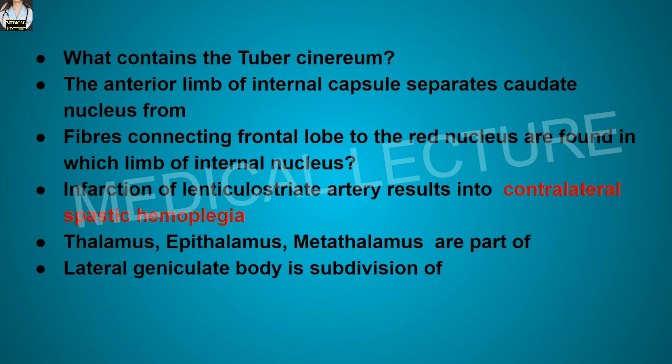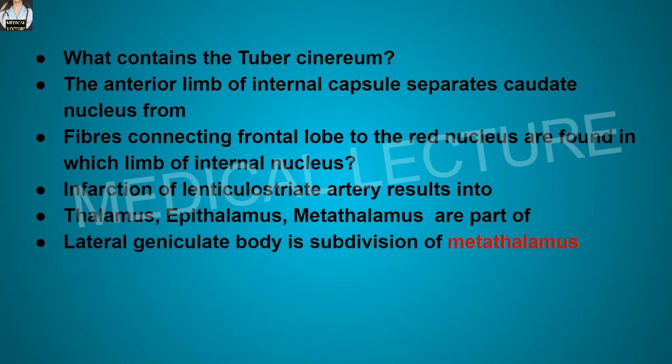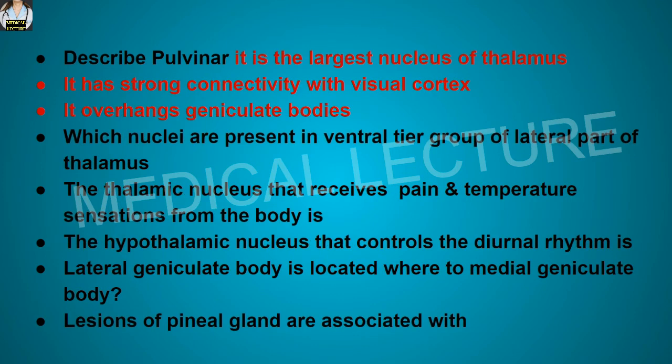Thalamus, epithalamus, and metathalamus are part of the dorsal thalamus. The lateral geniculate body is a subdivision of the metathalamus. The pulvinar is the largest nucleus of the thalamus; it has strong connectivity with the visual cortex and it overhangs the geniculate bodies.